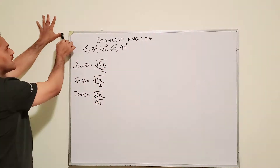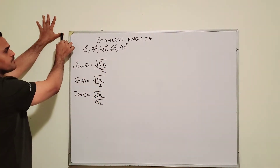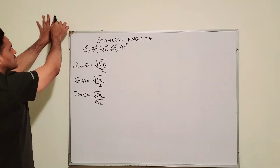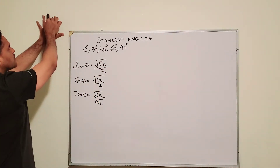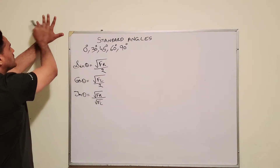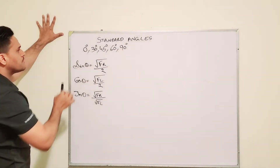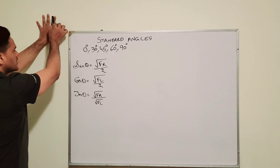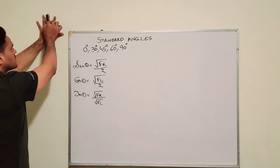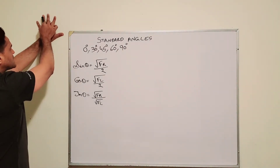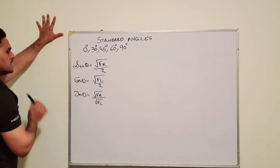Our thumb is 0. This finger is 30. This is 45. This is 60. And this is 90. Once more: our thumb is 0, this is 30, this is 45, 60 and 90.